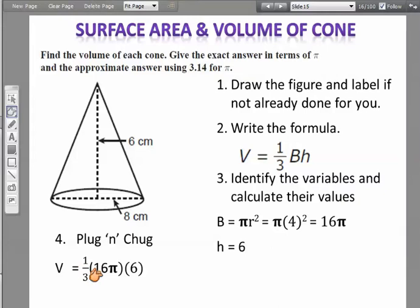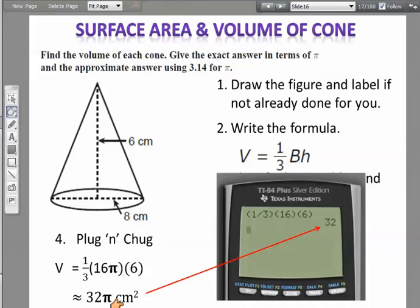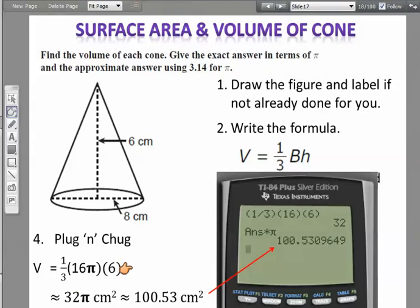So now I'm going to plug and chug. I got 1/3, plugged in 16π for capital B, plugged in 6 for h. In my calculator I just said, okay, I'm going to take 1/3 times 16 times 6, and that's giving me 32. Then I just bring the π down, so I got 32π centimeters cubed. Next I'm going to take that 32 and multiply it by π, and I get 100.53 centimeters cubed.